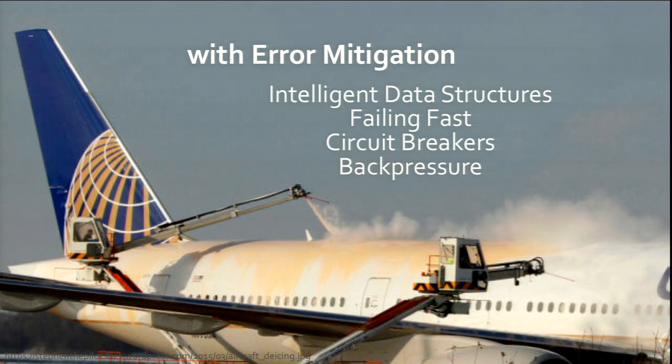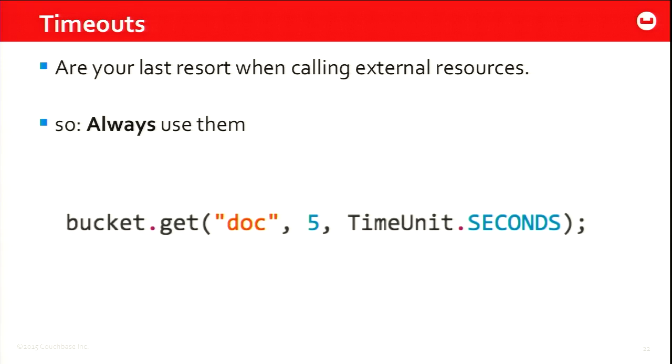Timeouts are one of my favorite topics — probably 50% of my workday is spent on timeout exceptions. But timeouts are a good thing. If you don't have a timeout, something bad is happening anyway but you're not releasing from it. Without a timeout, your threads are blocked and will never unblock. My recommendation: always use timeouts and set reasonable timeouts. Here's an example from the Java SDK — we load a document from the server and set the timeout to five seconds; by default it's two and a half seconds.